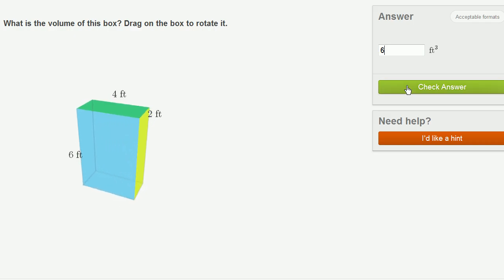So we can multiply the height times the width of 4 feet. And then we can multiply that times its depth of 2 feet. So 6 times 4 is 24, times 2 is 48 feet.